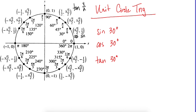So if we want to look for sine 30, we go to 30 degrees. Sine is always the y-coordinate, so sine 30 equals 1/2. If we look at cosine at that same angle, cosine is always the x-coordinate, which in this case is √3/2.